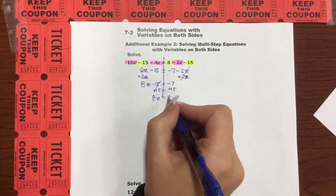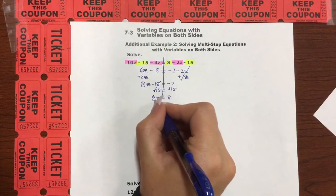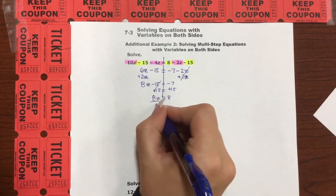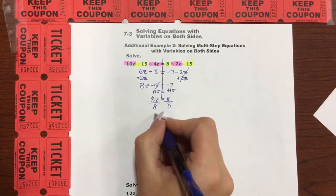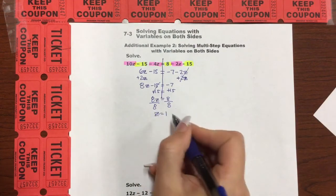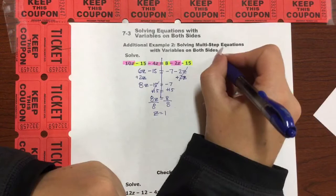And we need to isolate the z. The 8 is there. It's related through multiplication, so we're going to divide both sides by 8. And we're left with z equals 1. Awesome! But we are not done.